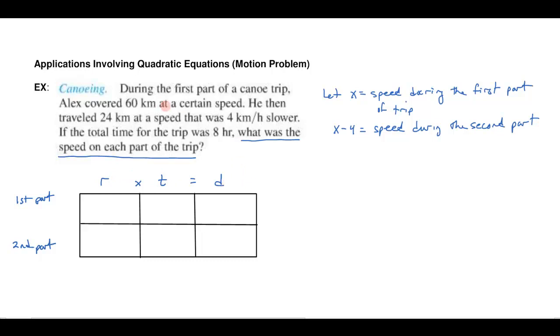Now it tells me that during the first part of the trip that Alex went a distance of 60 kilometers. So I know that. And during the second part of the trip he went 24 kilometers. So I know that information. Now I don't know what the rate is for the first part. And I don't know what the rate is for the second part. That's what we're going to solve for.